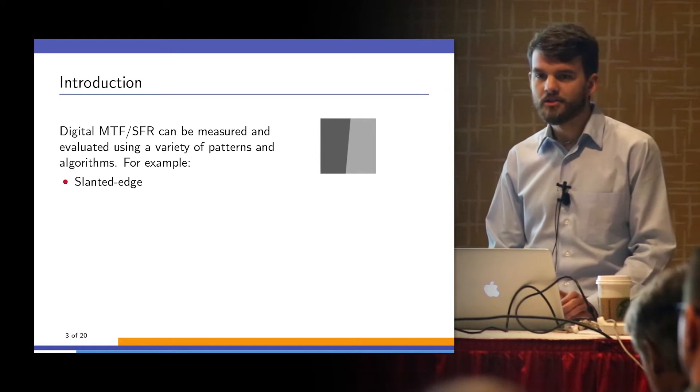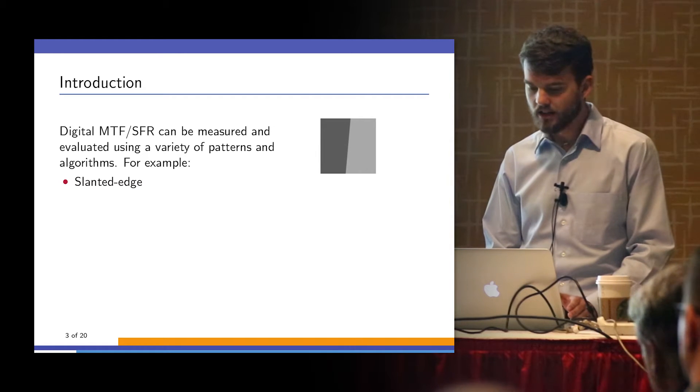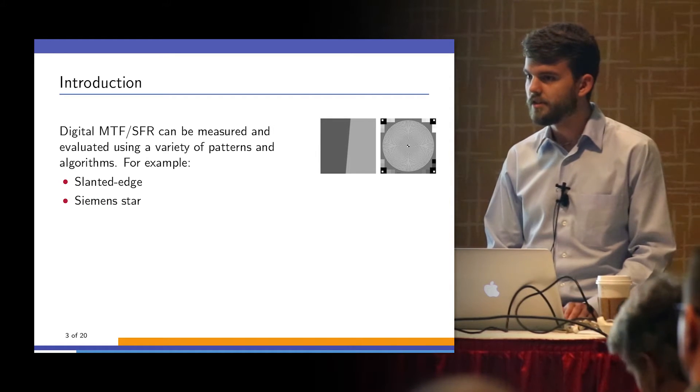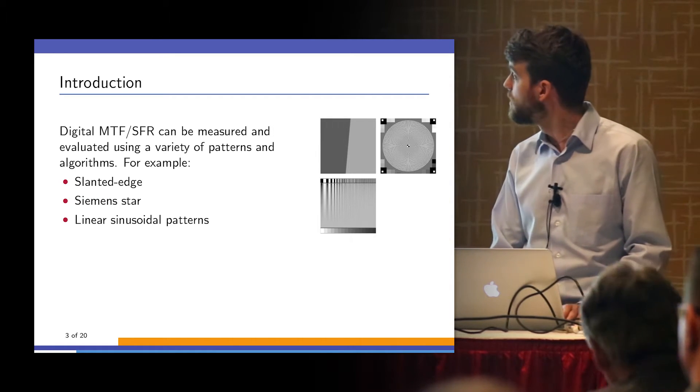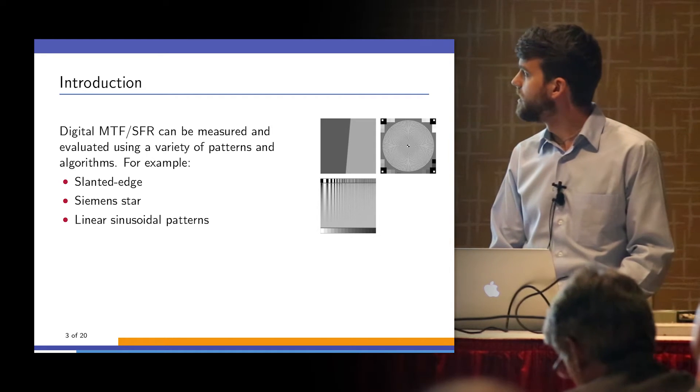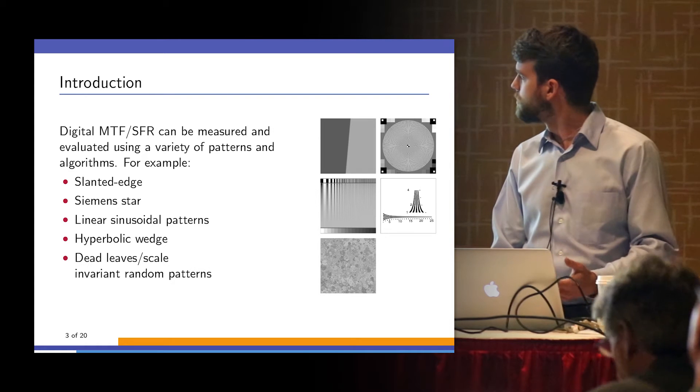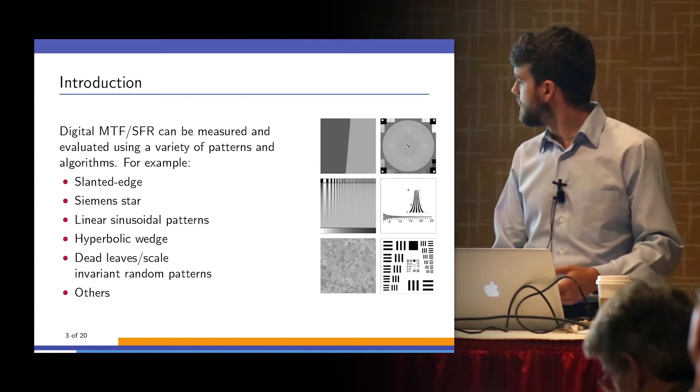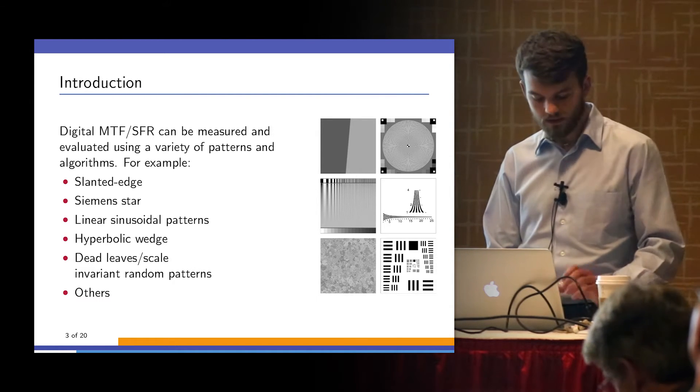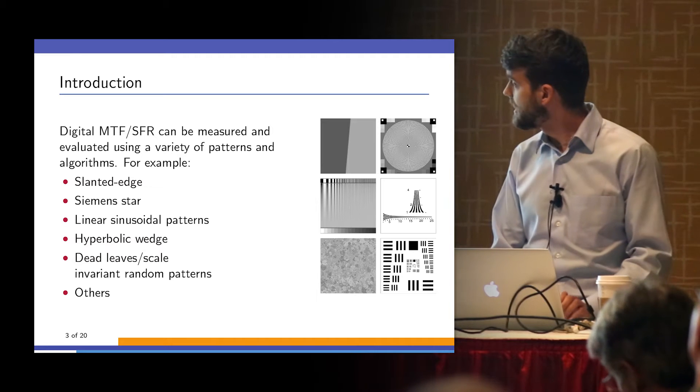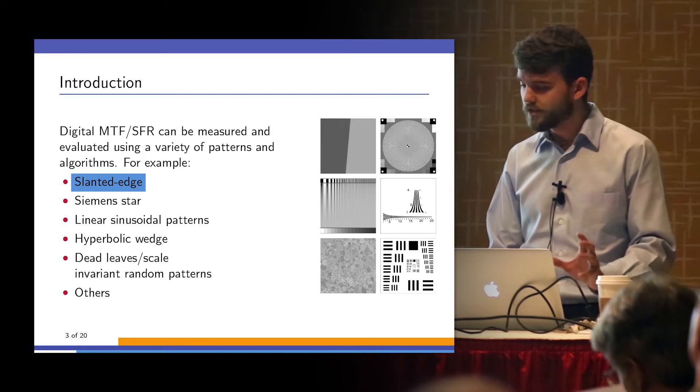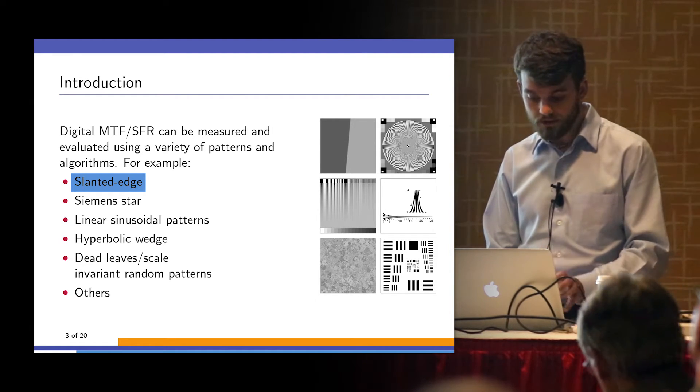MTF can be measured in a whole variety of ways, and we see a lot of that at this conference. In fact, we've seen several new ways. But some common ones are slanted-edge, Siemens star, sinusoidal patterns, wedges, dead leaves, and there's a few others that are either less common or out of date. We're going to just look at slanted-edge for the purposes of this talk.